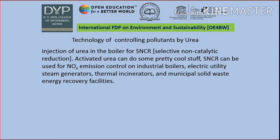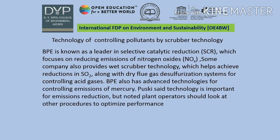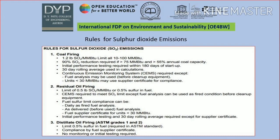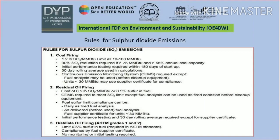Another method is the technology of controlling pollutants by scrubber technology. Here the flue gas desulfurization system is used for controlling acid gases — this is an advanced technology. We also look at the rules applied for sulfur dioxide emissions from coal firing, residual oil firing, and distillate oil firing.